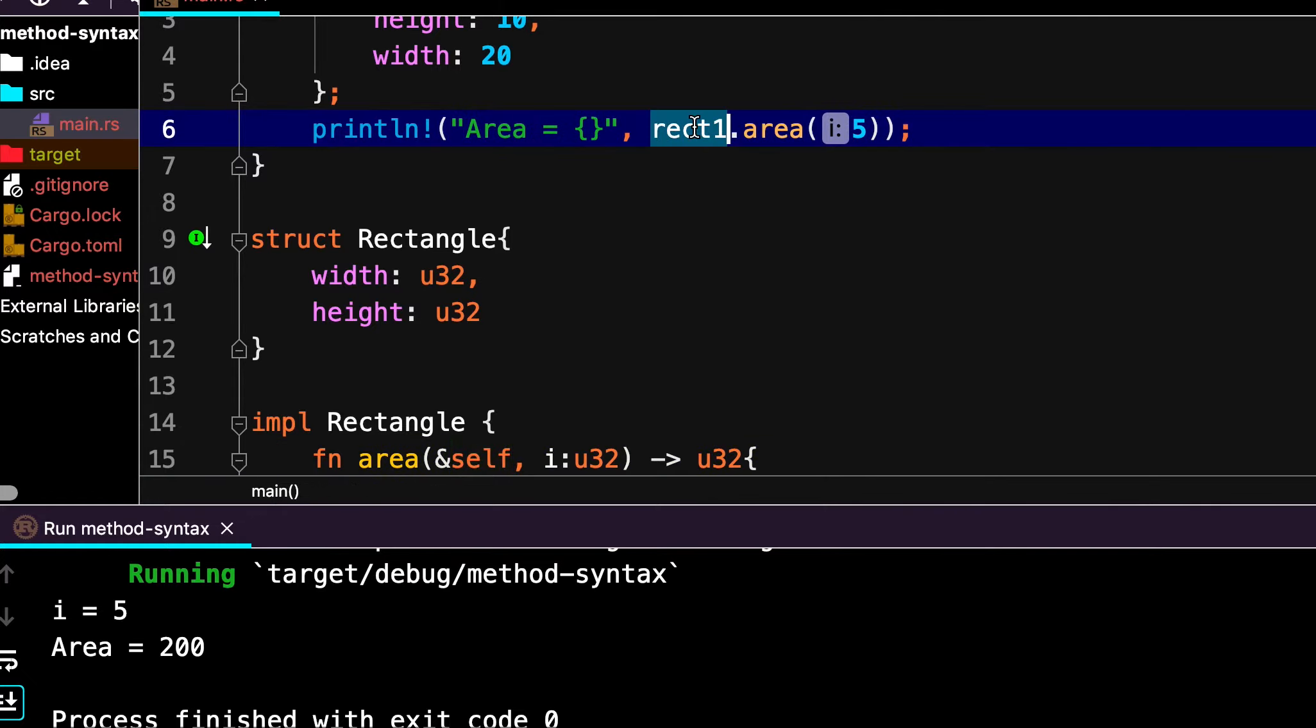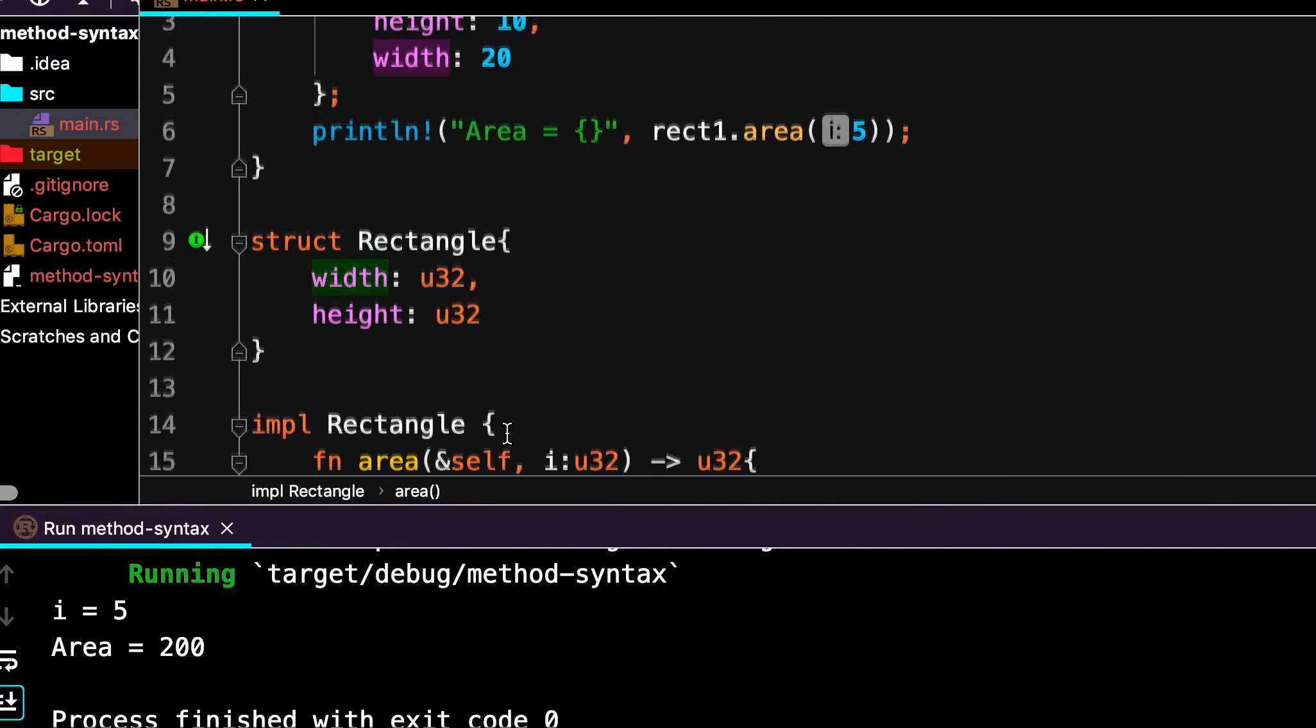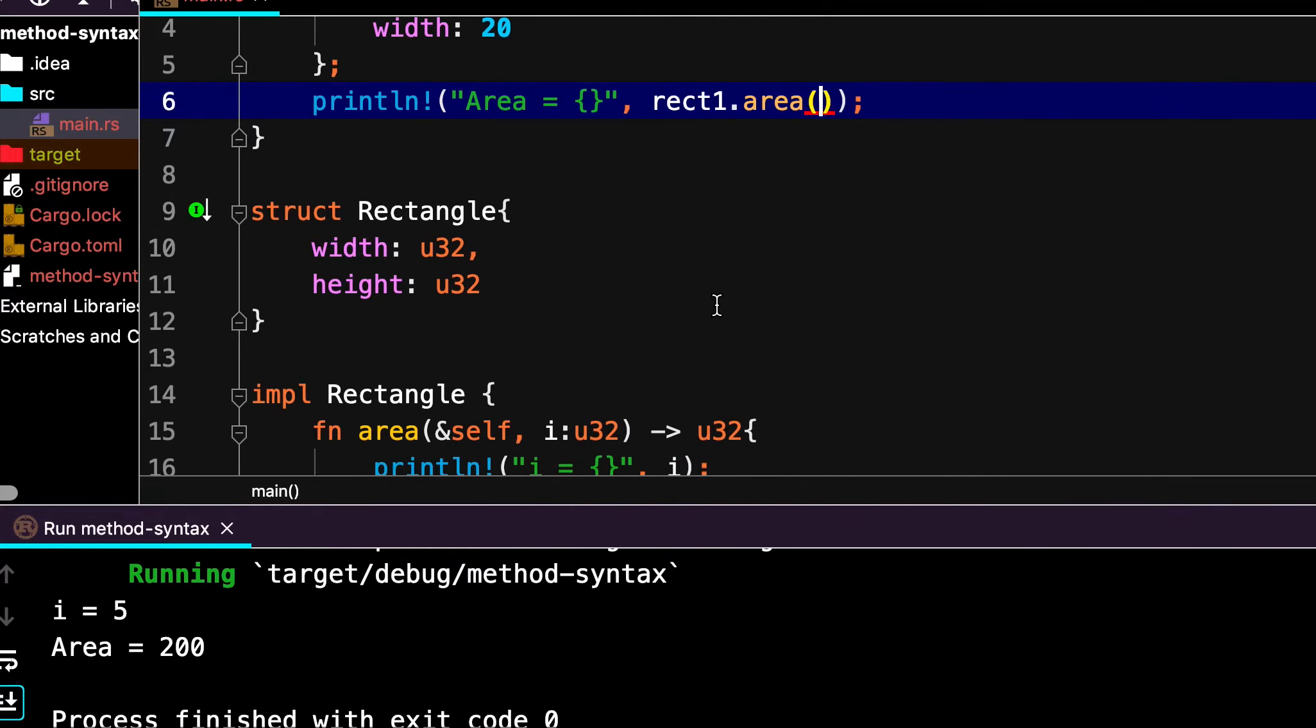So here it takes two arguments, one is self and the second one is n u32. Here we are just passing this second value. We don't need to pass this because this rect1 is implicitly treated as this self, and this self.width denotes rect1.width. So in this case this is not required, so I will remove it.